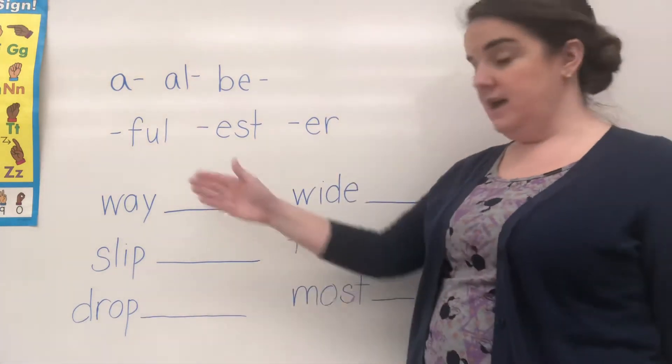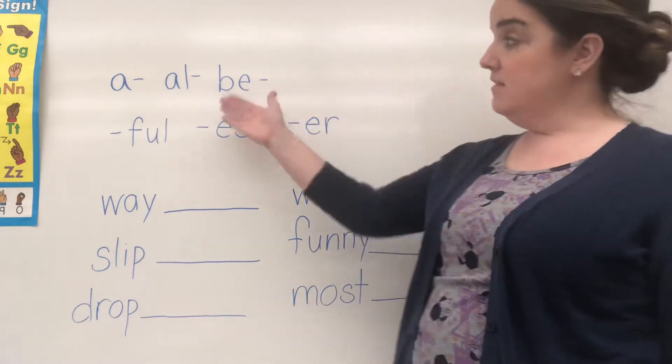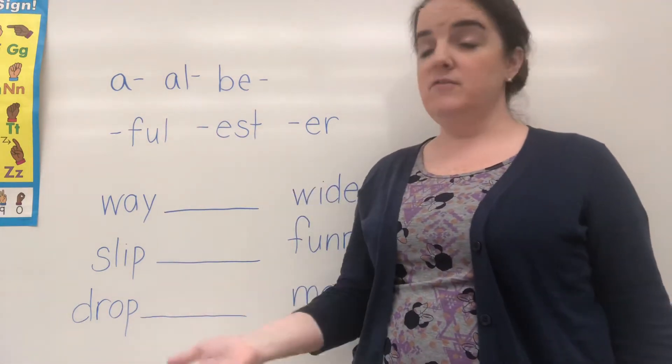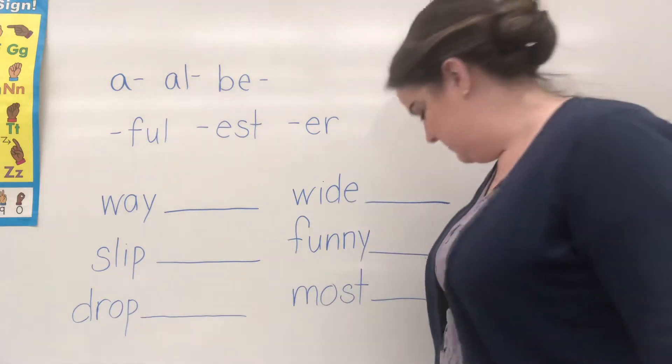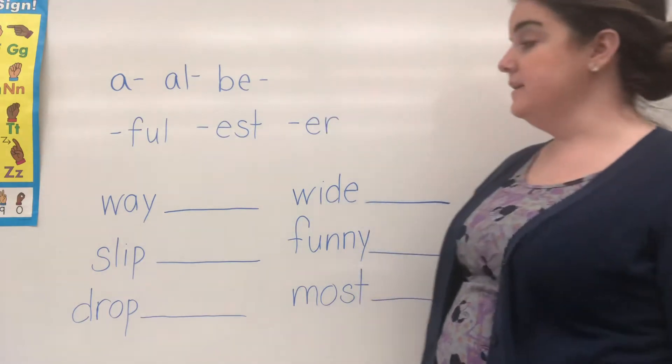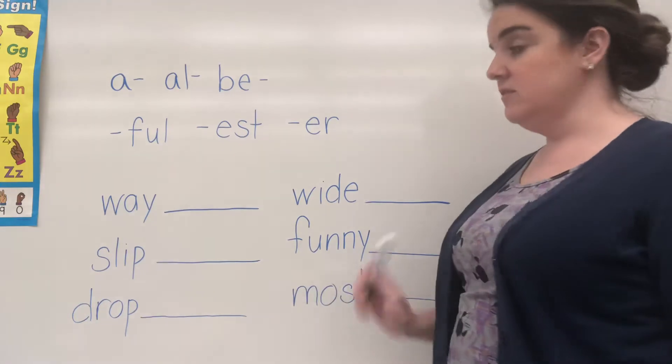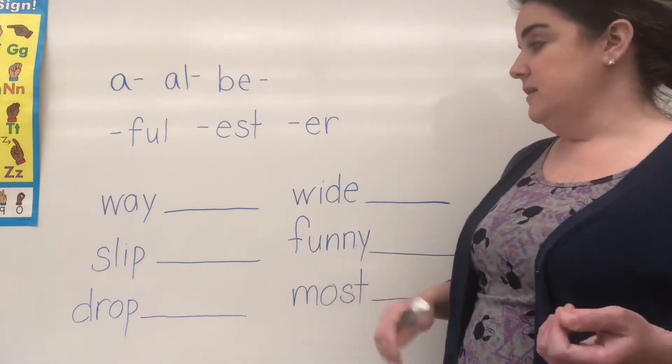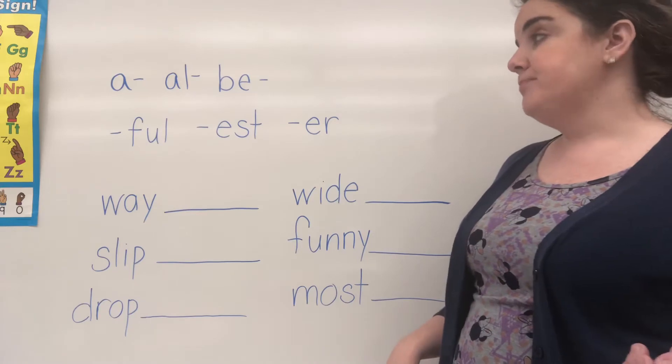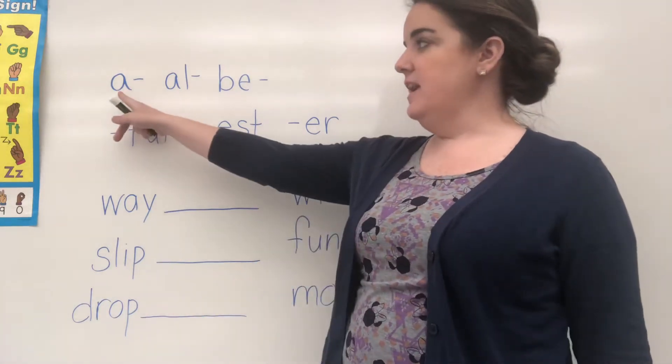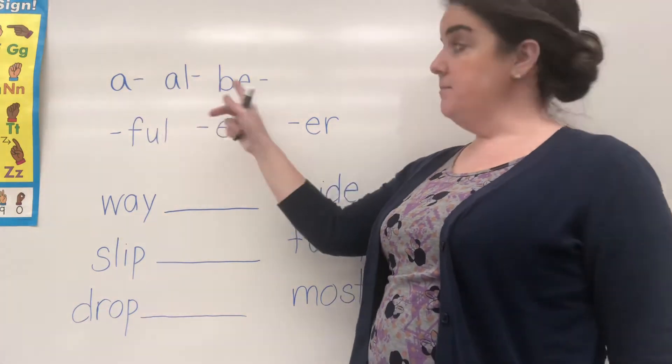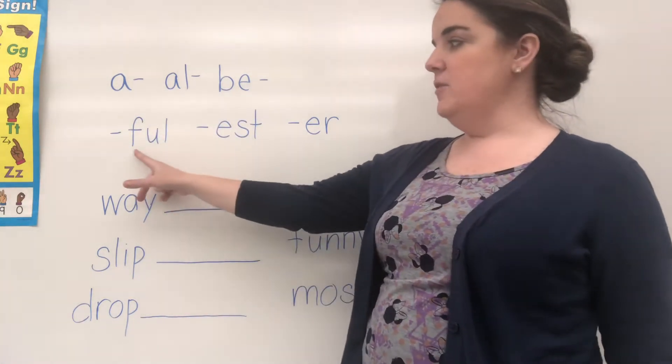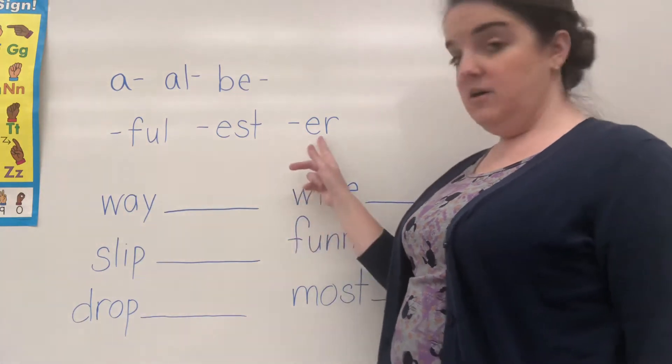Now, if you look at the board here, I have some words written at the bottom. And then at the top, we have some prefixes and three different suffixes. We're going to either add a prefix or a suffix to these different words, and I need your help deciding which one to use. We have prefixes A, AL, and BE, and then suffixes F-U-L (ful), E-S-T (est), and E-R (er). All right.